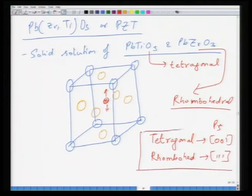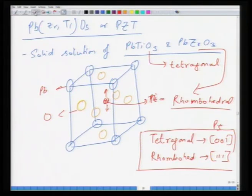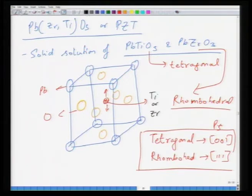The tetragonal structure has a polar vector along 001 and the rhombohedral structure has it along 111. This difference occurs when you go from the tetragonal to rhombohedral side. PZT makes a continuous solid solution, and its phase diagram is a pseudo-binary diagram with PbZrO3 on one end and PbTiO3 on the other.